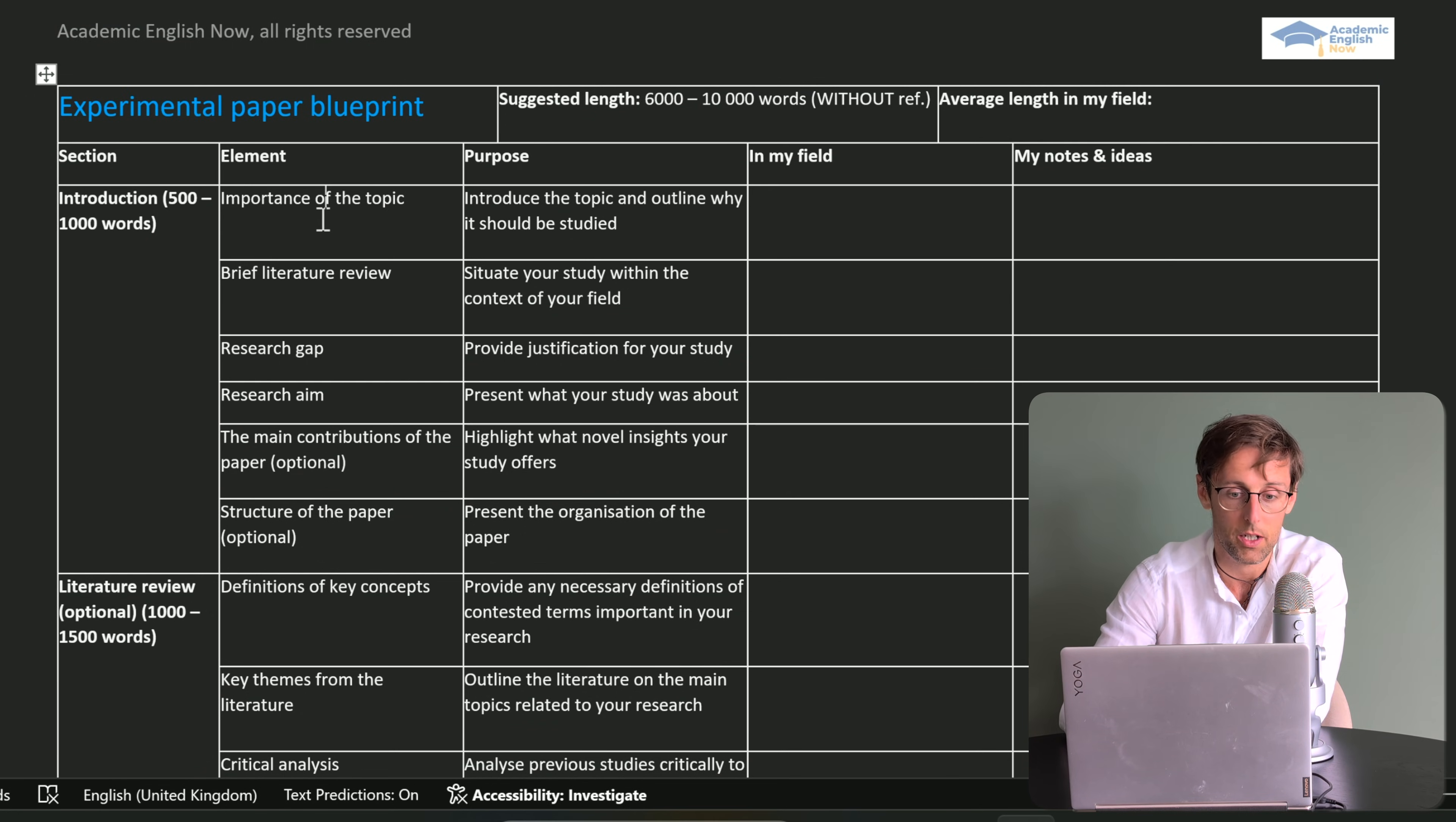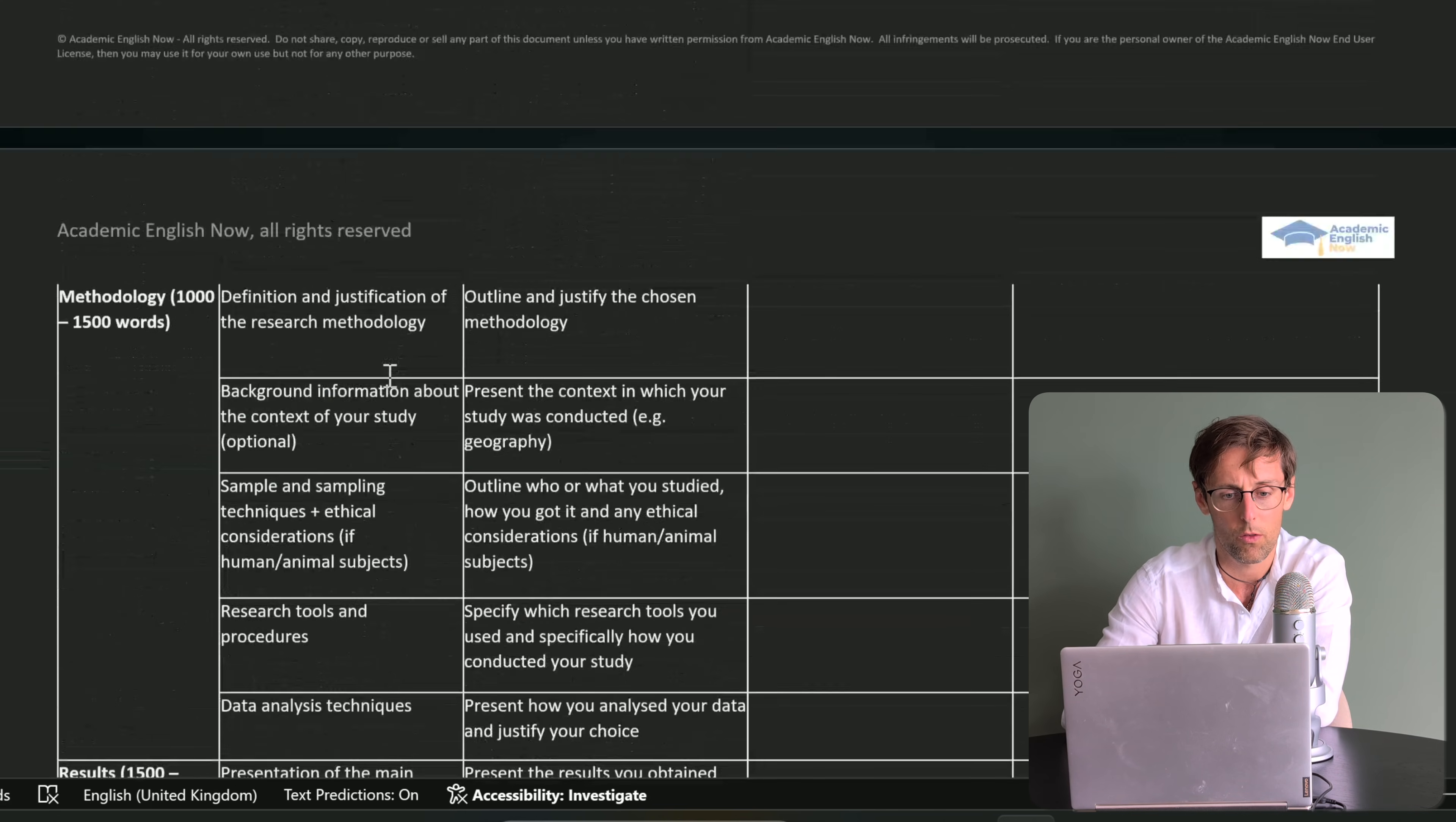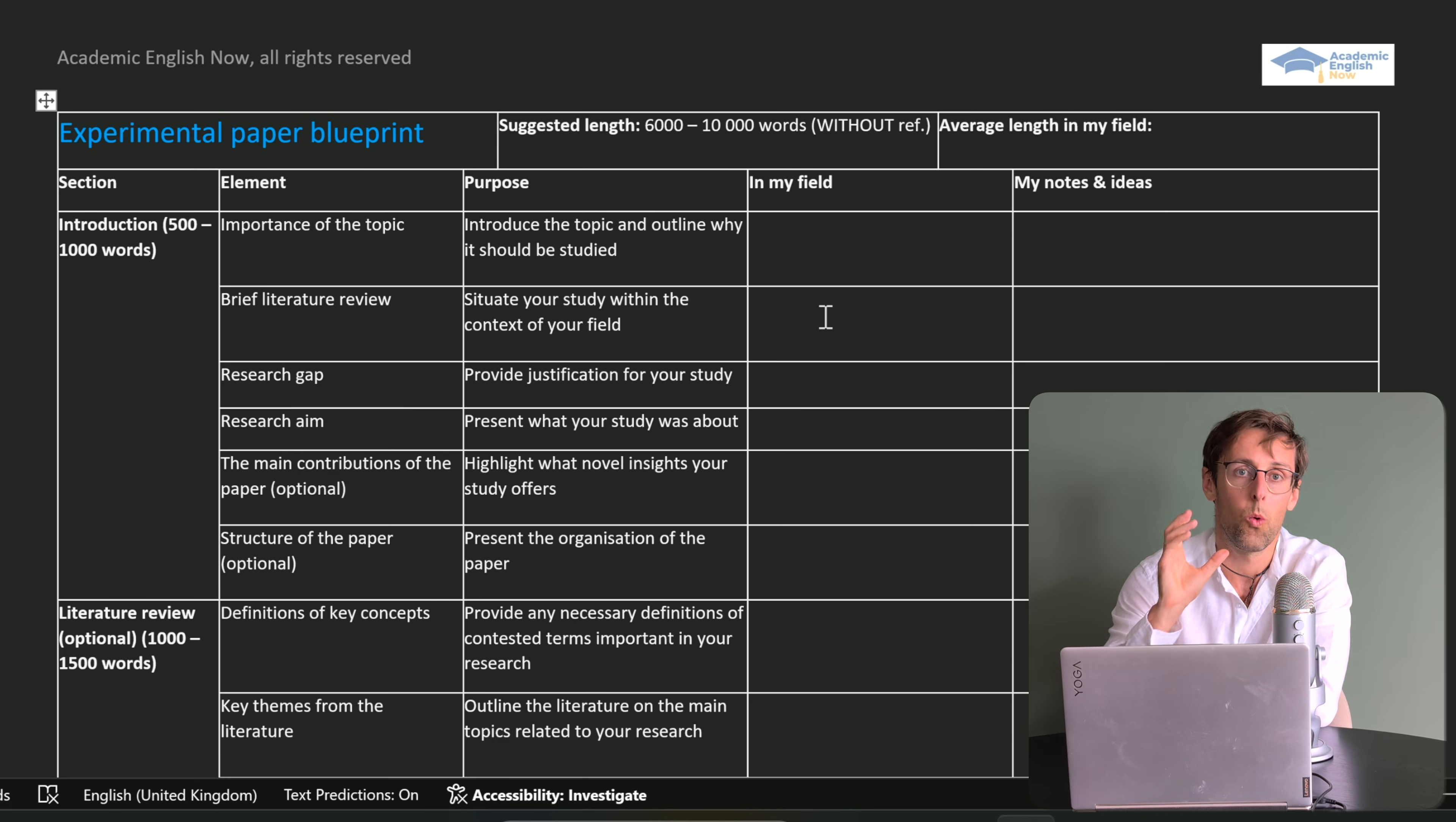Once you've done that, look more specifically at each of the biggest sections and focus on the smaller elements. For example, if we look at the introduction, do the five papers you've downloaded typically start with the importance of the topic, then go to brief literature review, research gap, research main contributions, and structure of the paper? Or is some of the elements typically missing or maybe they come in a different order? You want to do that for all of the big sections in here.